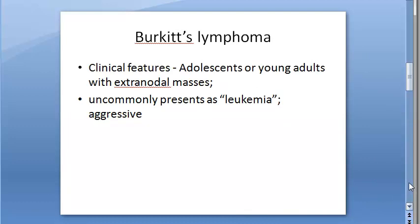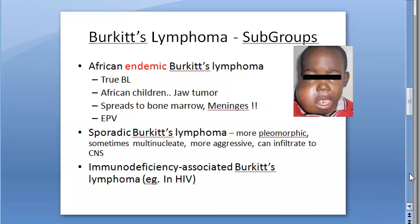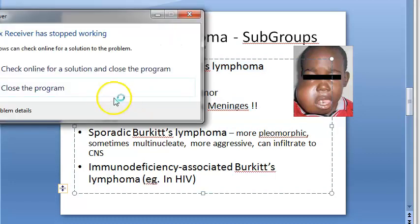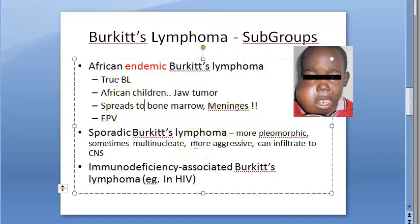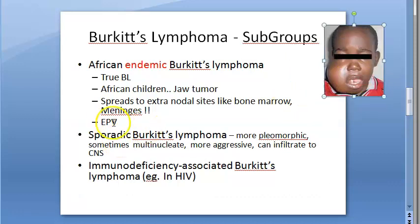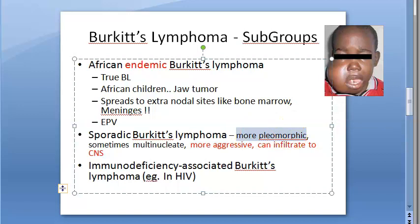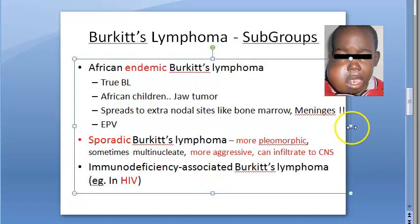Clinical features include adolescents or young adults with extranodal masses. There are three subgroups: African endemic Burkitt's lymphoma — the true Burkitt's lymphoma — where African children present with jaw tumor that can spread to extranodal sites like bone marrow and meninges, mainly caused by EBV. Then sporadic Burkitt's lymphoma, which is more aggressive, infiltrates the CNS, and is more pleomorphic. Then immunodeficiency-associated Burkitt's lymphoma in AIDS patients.